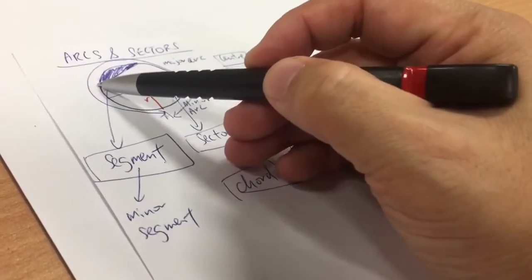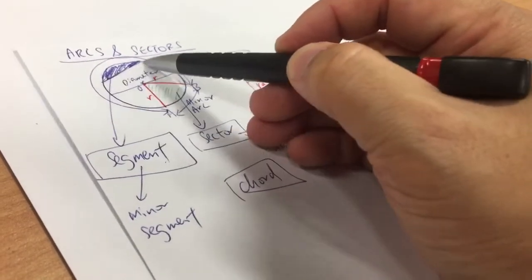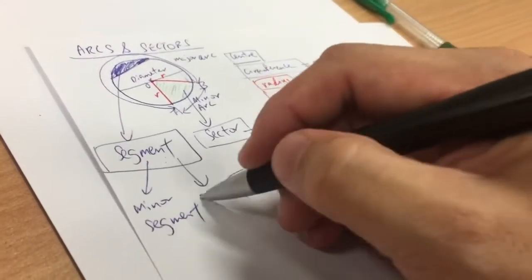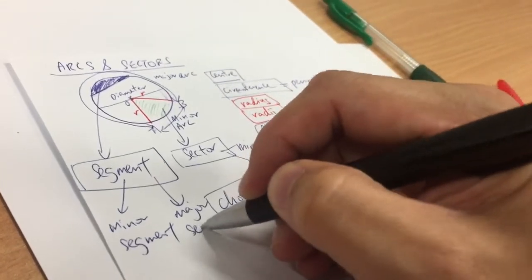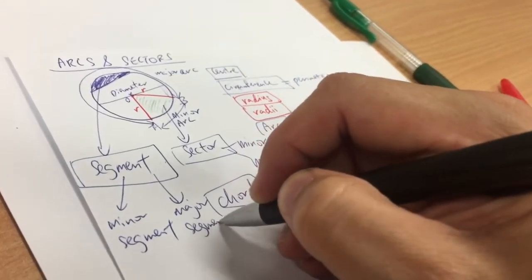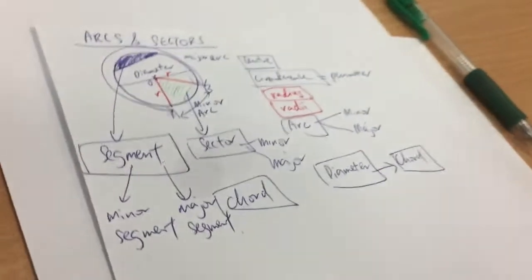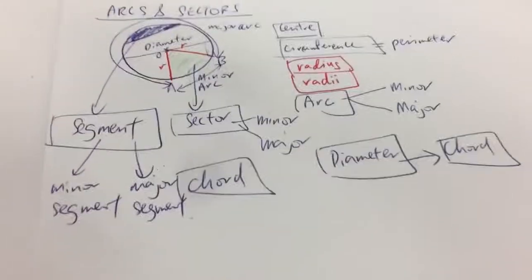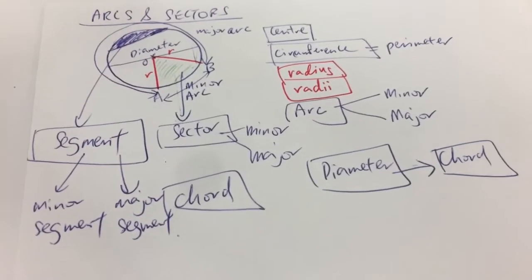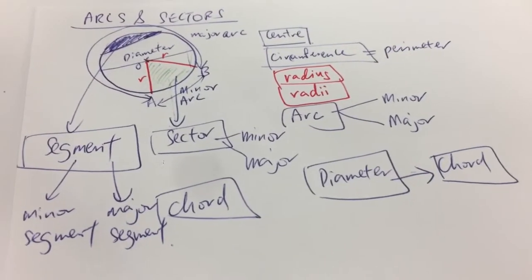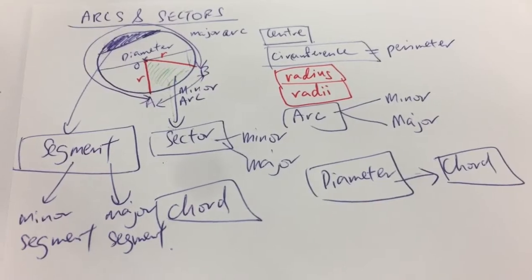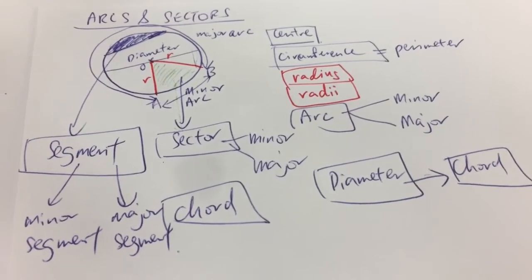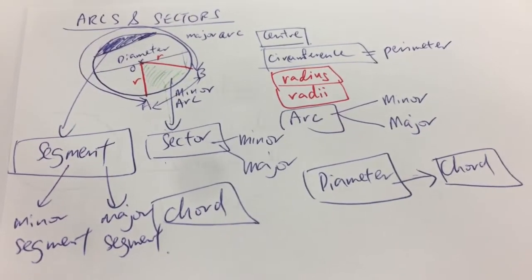The big piece — the chord and the major arc — this piece is called a major segment. So this is all the technical jargon stuff that you must know. I hope I'm clear in explaining all this. If any part is not clear, just stop the video, rewind, and watch it again.